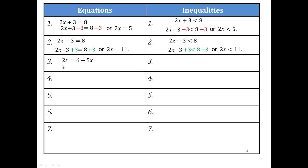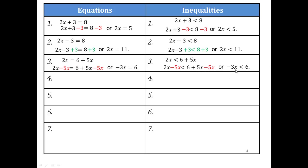Let's try this one on your own. Our goal is to have all variable terms on the same side. We have 2x equals 6 plus 5x. To get rid of the 5x, we subtract 5x from both sides — adding 5x is undone by subtracting 5x. Then 2x minus 5x is negative 3x, so this becomes negative 3x equals 6. You can do the same with an inequality: subtract 5x from both sides, and the inequality is preserved, giving negative 3x less than 6.